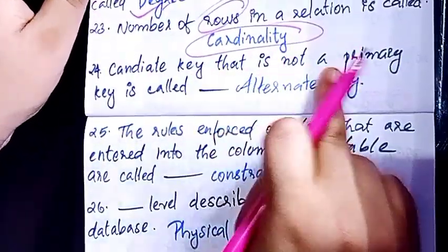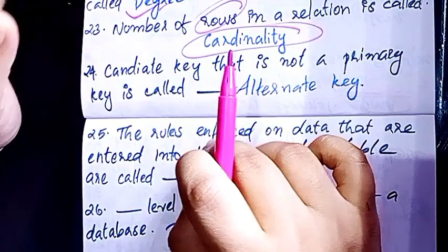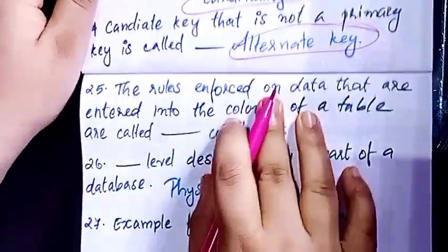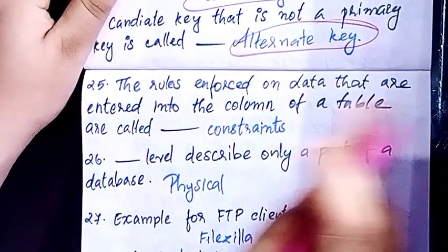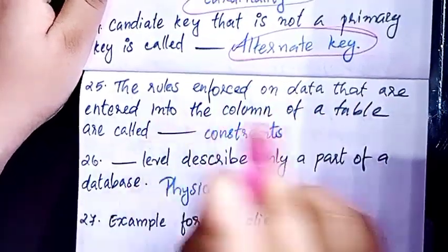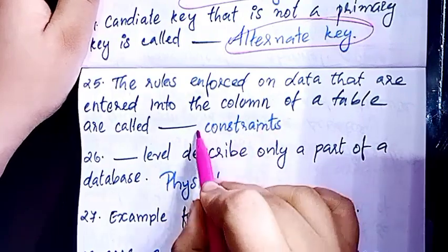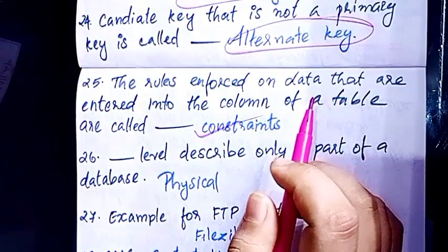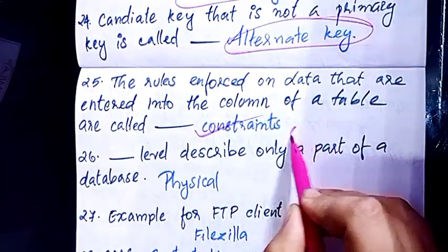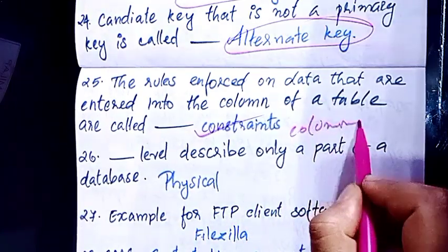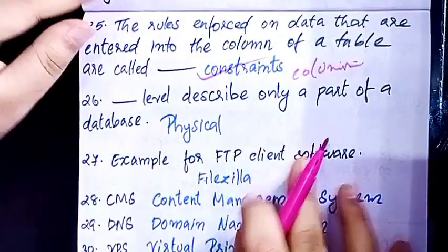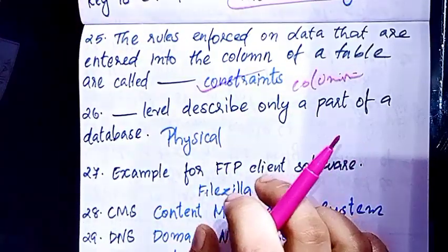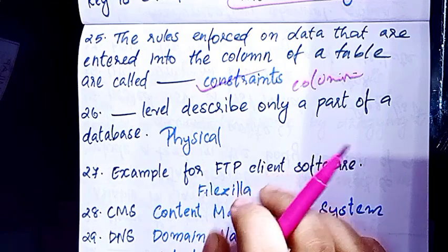Candidate key is not a primary key. The rules enforced on data that are entered into the column of a table are called constraints. The next topic describes tasks at the level of the database.